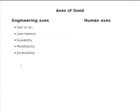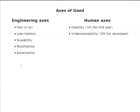On the human side — these are things that affect people. Usability is primarily for end users and site builders: how easily can they get their task done? This is different from understandability, which is for a developer — if I'm reading the code for a module six months later, can I figure out what the heck is going on? Versus a user: can they figure out what buttons they need to push?